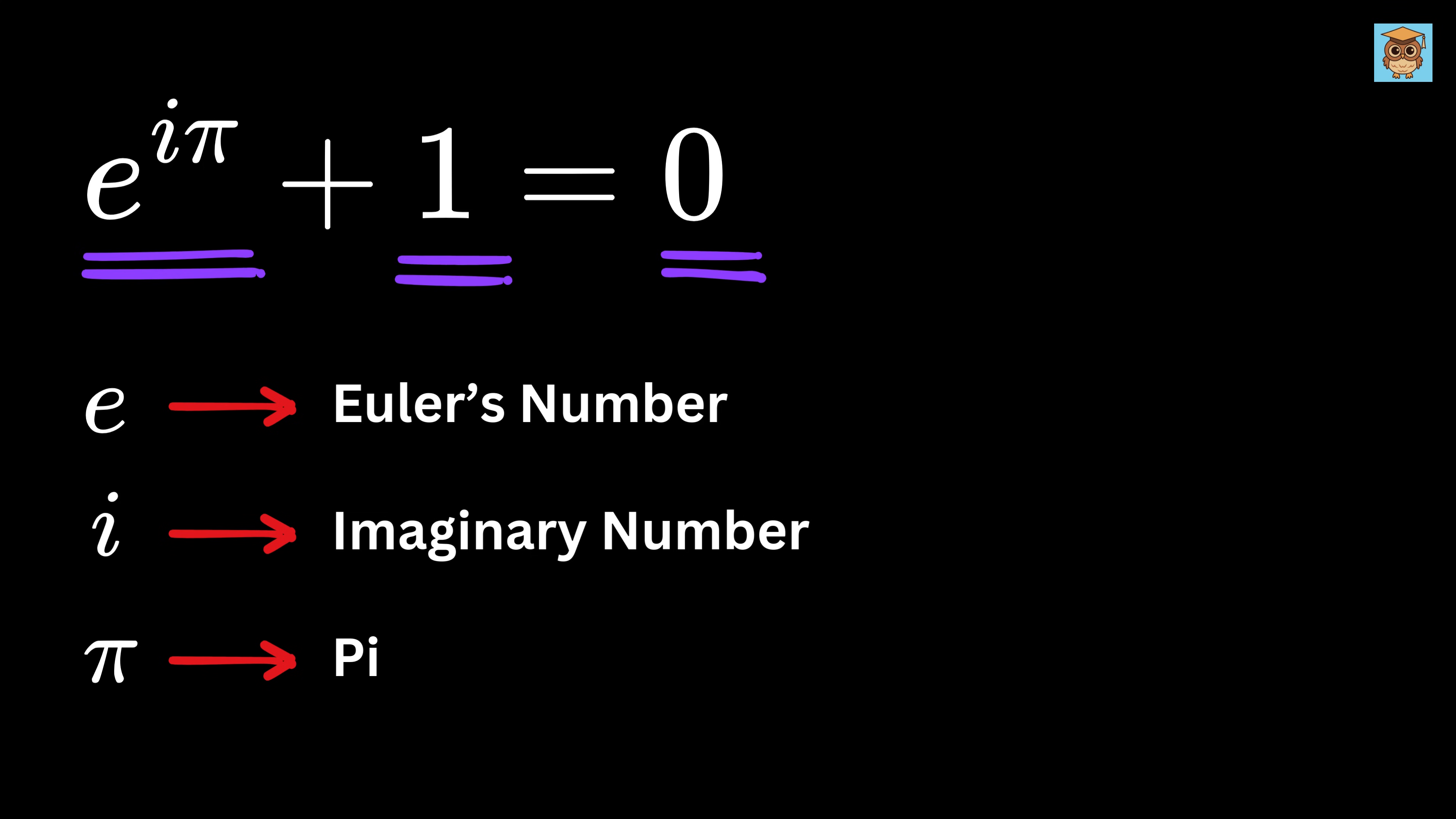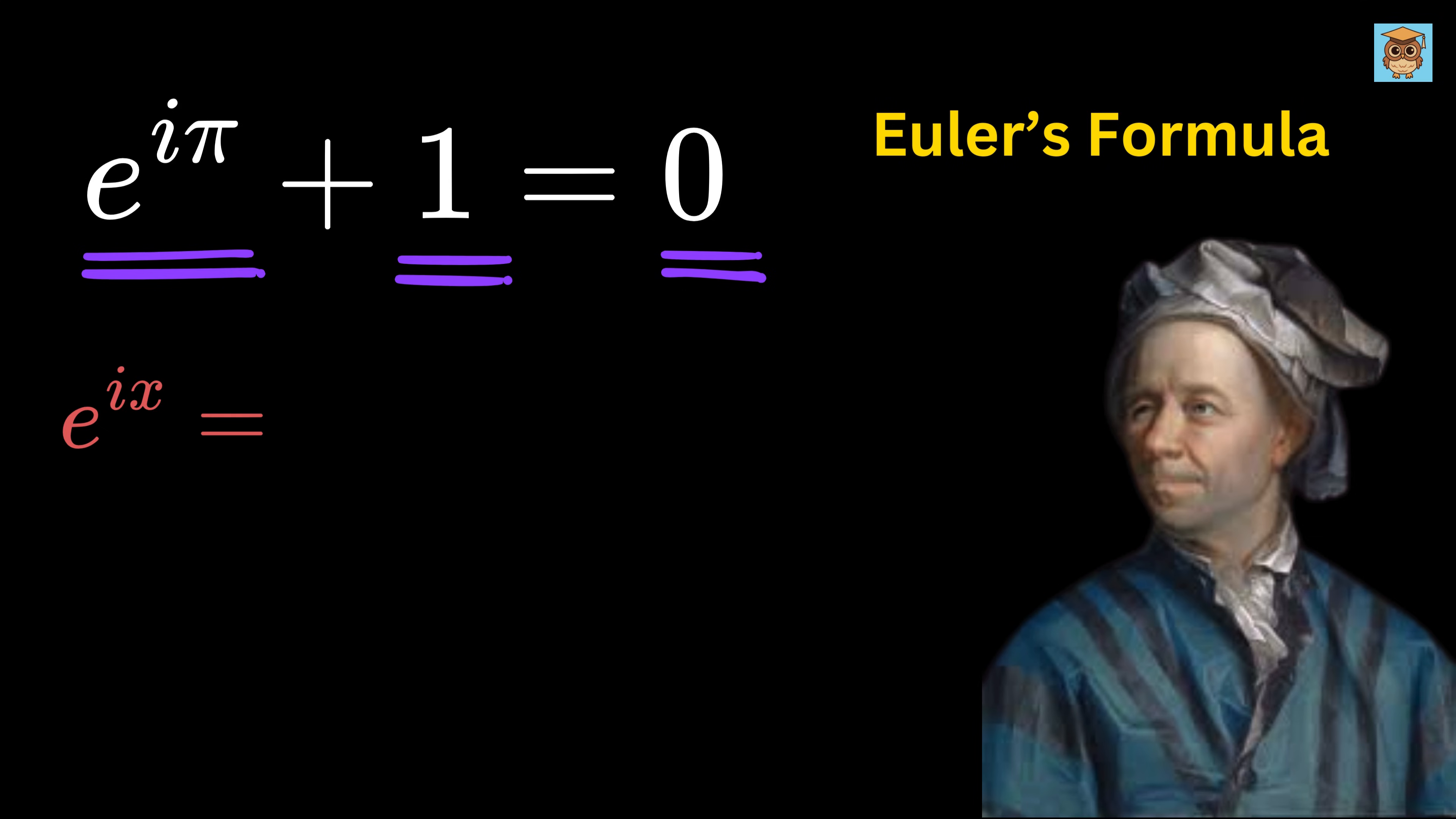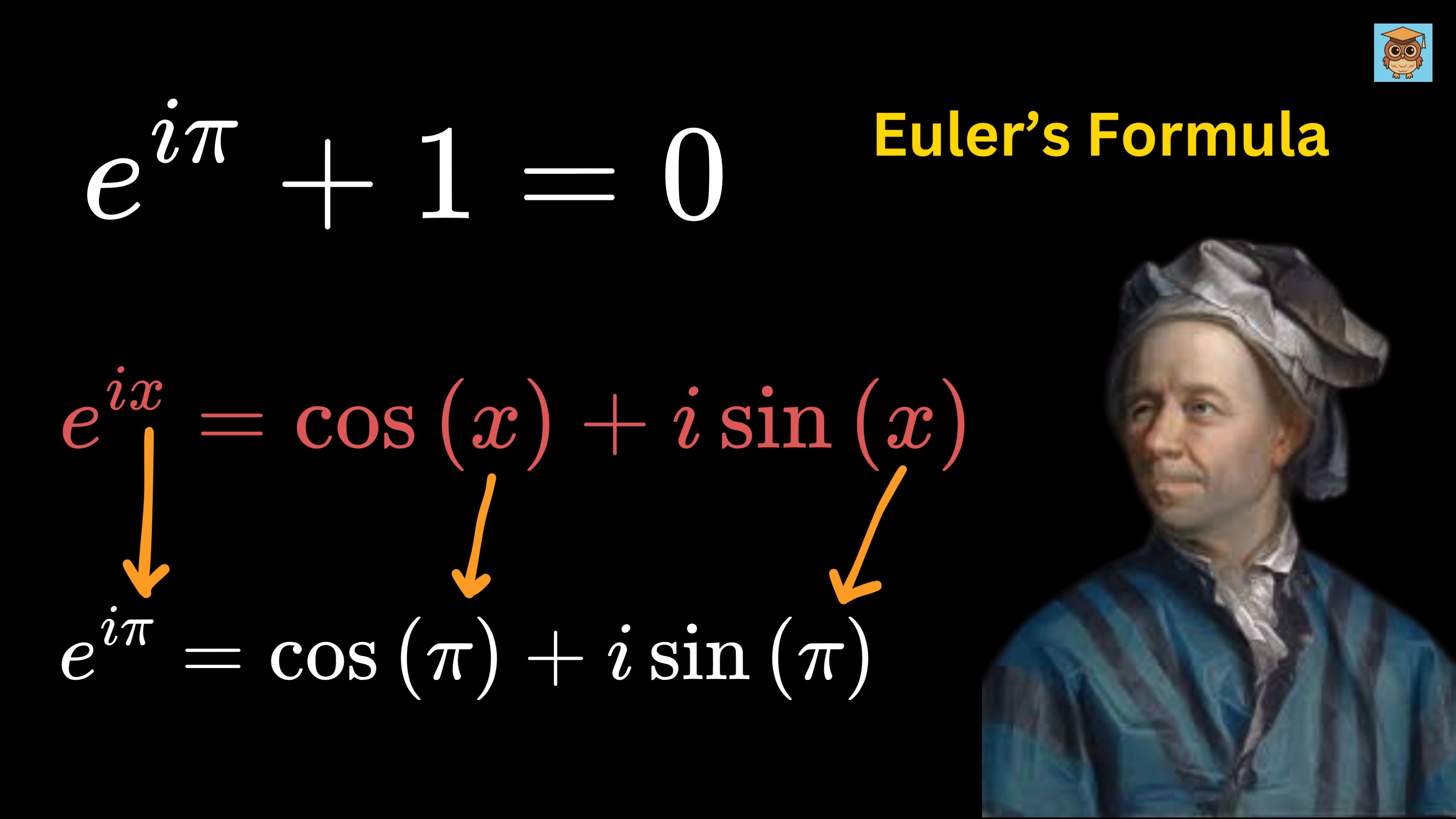It arises naturally from Euler's formula, which is e to the ix equals cos(x) plus i times sin(x). When you put x as π radians, we get this beautiful equation.